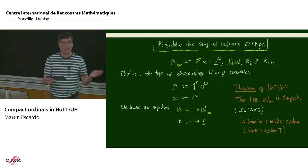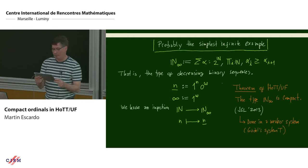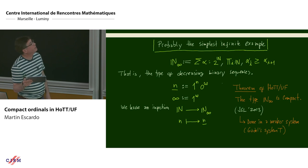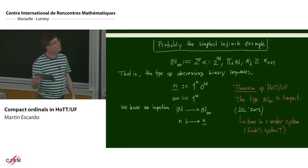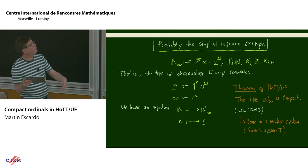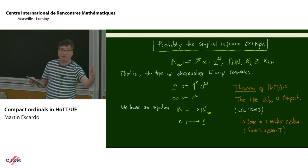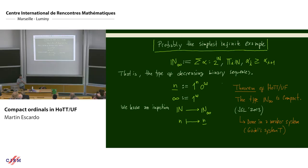So we'd better give an example. We had the finite spaces thanks to the question before. One example is the type mentioned before: the one-point compactification of the natural numbers N∞, defined as the type of all decreasing binary sequences. You can embed the natural numbers into N∞ — the intuition, which is true in the topological topos, is that the sequence of finitely many ones followed by zeros converges to the sequence with infinitely many ones as you increase the number of ones.